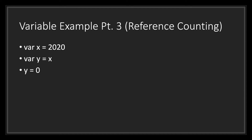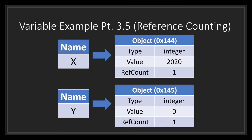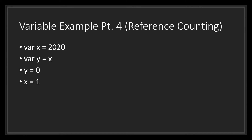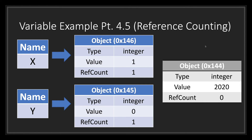What happens in memory when we assign a new integer value to Y? Godot creates a new object with a new memory address to contain the new value, then points Y to that new object. So while X is still 2020, Y is now zero. When we then change the value of X, Godot creates another new object, creates its type and value, and points X to it, increasing its reference count by 1. At this point, nothing is pointing to the previous object with value 2020, so its reference count drops to zero. This tells Godot to release that object from memory.